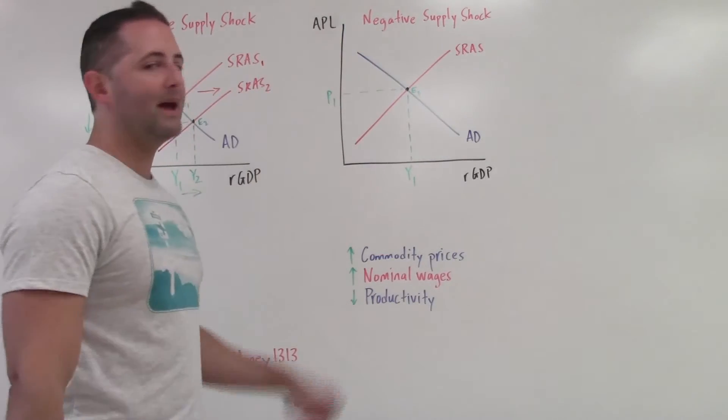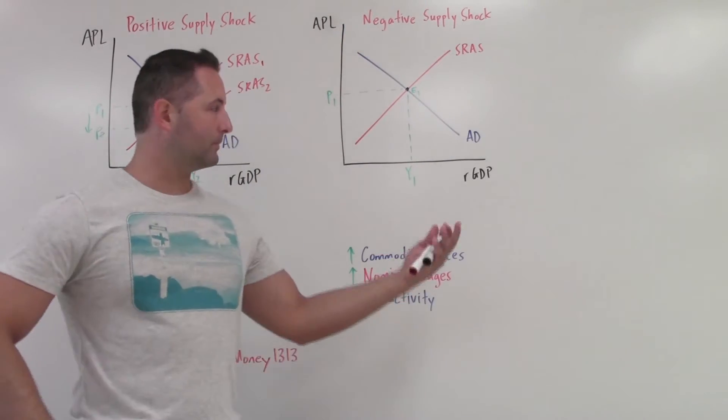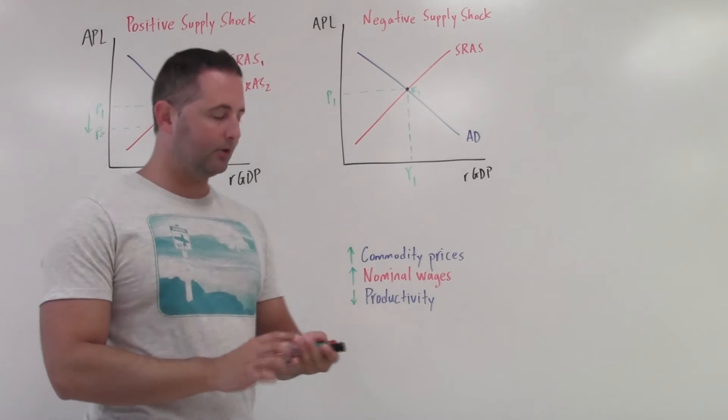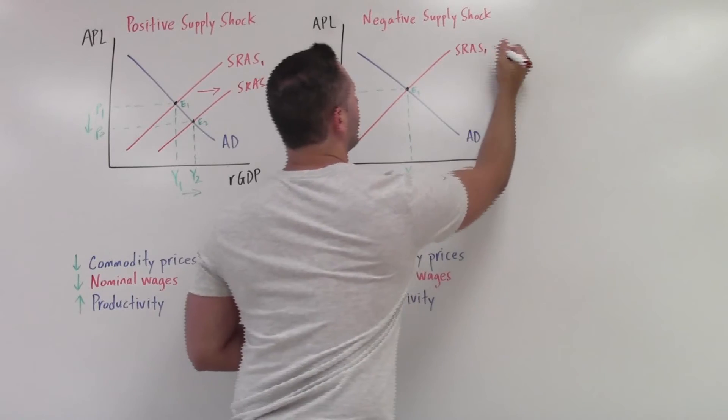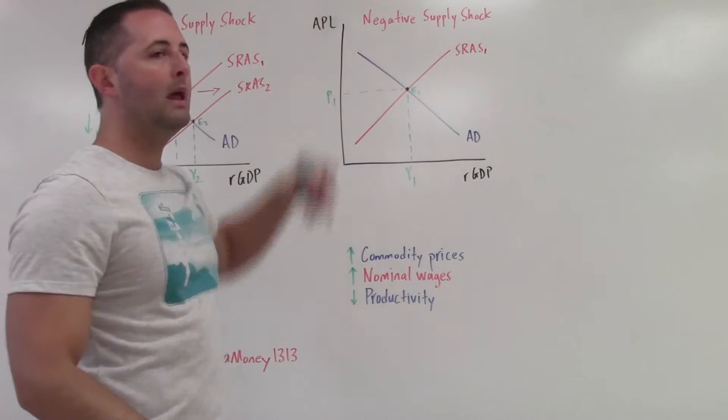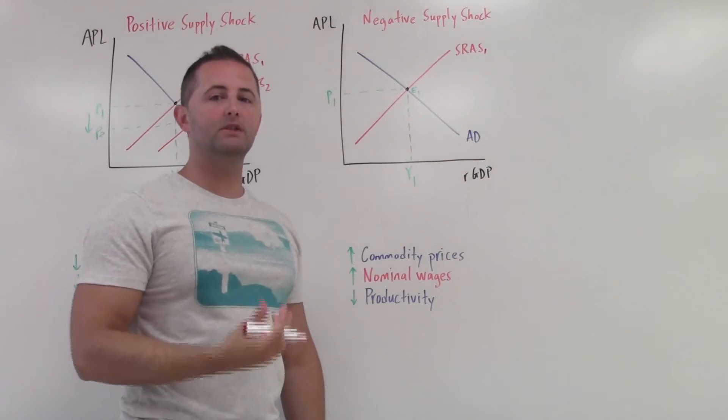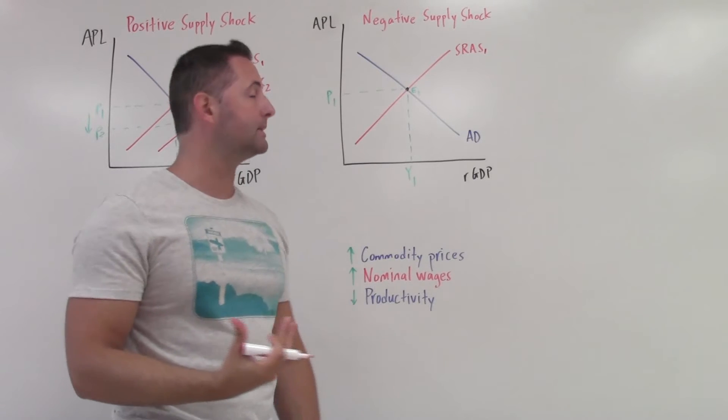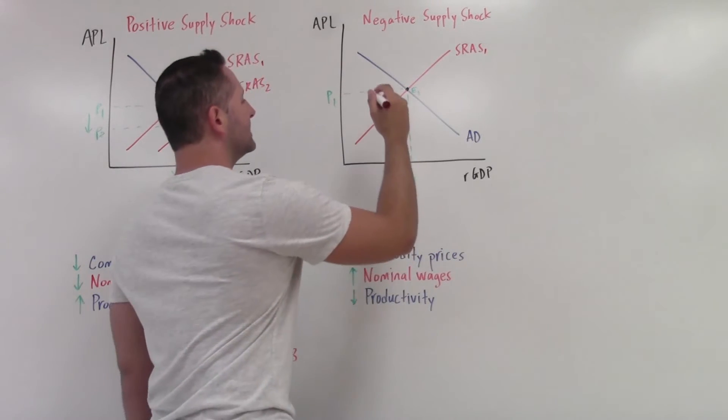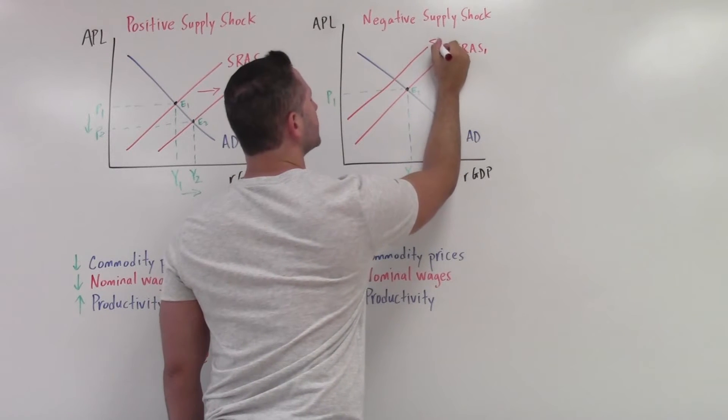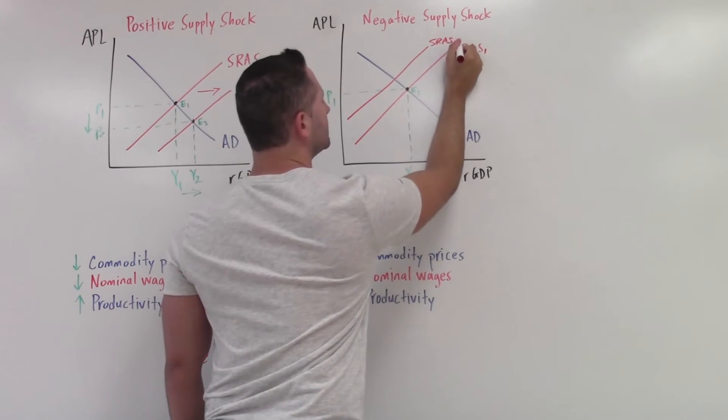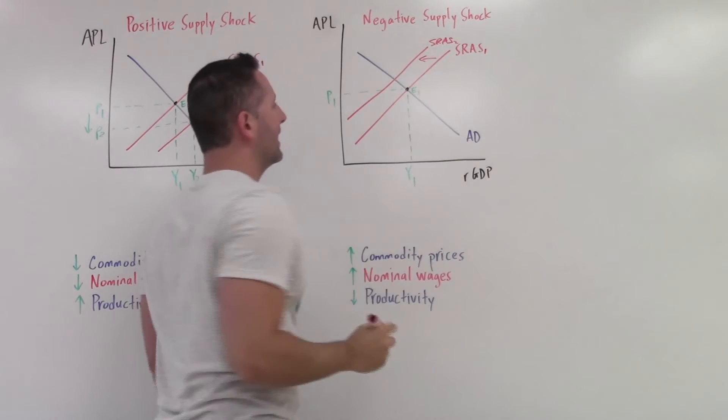On the other hand, a negative supply shock, as the word negative there is indicating to us, it's not a very good thing that's happening here. So let's model it. We have SRAS 1. Negative supply shock means that there has been a decrease in aggregate supply. So decrease, we shift to the left. So SRAS, shifting left. So we have it right there. It looks something like that.